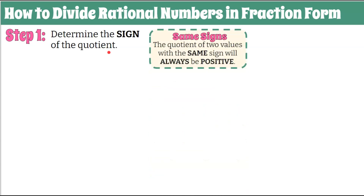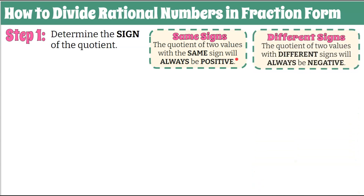We're going to use the same signs rule. The quotient of two values with the same sign will always be positive — so if both values are positive, positive quotient; if both values are negative, positive quotient. If they have different signs, the quotient of those two values will always be negative. So if one's positive and one's negative, our quotient is negative.